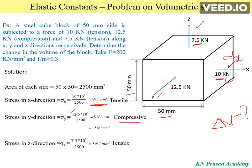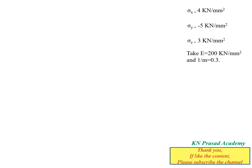Stress in the z direction, σz, equals the applied force in the z direction — 7.5 kN, that is 7.5 × 10³ — divided by the cross-sectional area of 2500. The value of σz equals 3 N/mm². The nature of the load is tensile, so σz is positive 3 N/mm². So σx = +4, σy = −5, and σz = +3 N/mm². Young's modulus E = 200 kN/mm² and Poisson's ratio (1/m) = 0.3.